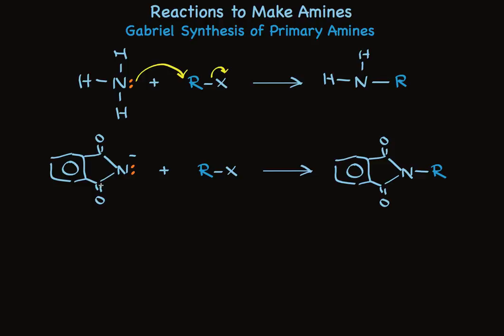You start with this rather odd-looking structure. Don't pay much attention to the stuff on the left. What's important is we have a nitrogen with an unshared pair of electrons and a negative charge. It's very nucleophilic, but because it has two carbonyl groups attached to it, the product can't alkylate. So when we have an SN2 reaction to attach the alkyl group, we make this product which does not react further.